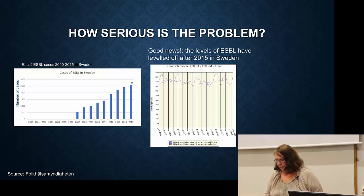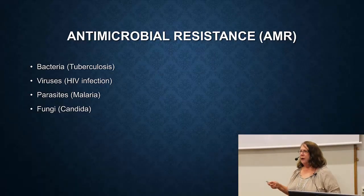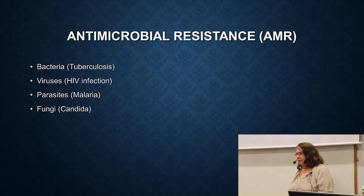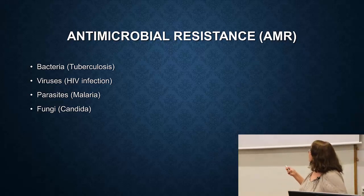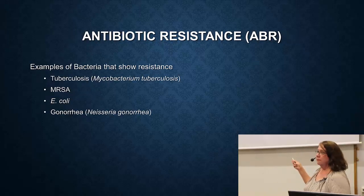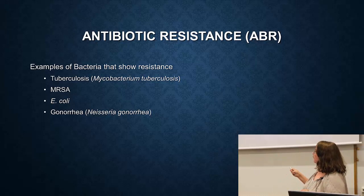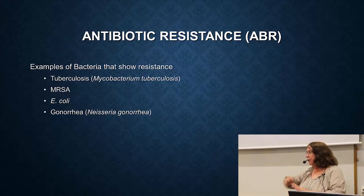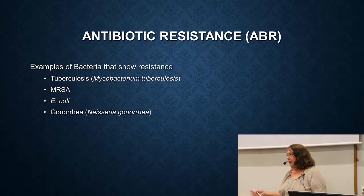One important point: I mentioned antimicrobial resistance, which is a broader term. It includes bacteria, viruses, parasites, and fungi — basically all small things. This course is only about bacteria — antibiotic resistance — looking at resistance in bacteria like tuberculosis, MRSA, E. coli, gonorrhea, etc. It could be a whole other course to talk about resistance to parasites and malaria, but I want to make sure the two terms are clear.